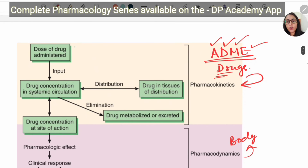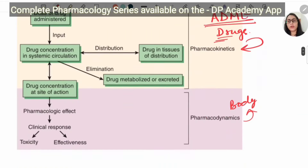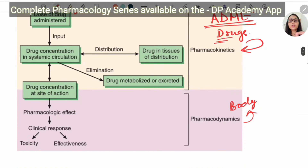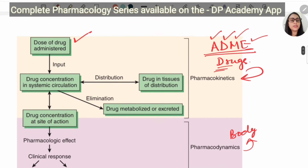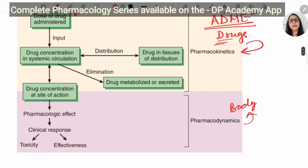A dose is administered either by the oral route or IM route — the routes of administration we already talked about. Then the drug is concentrated in the systemic circulation. Bioavailability is the percentage of the drug that reaches the systemic circulation. It gets distributed by the tissue, then the drug is metabolized — first pass metabolism happens in the liver — and E for excretion is the elimination of the drug.